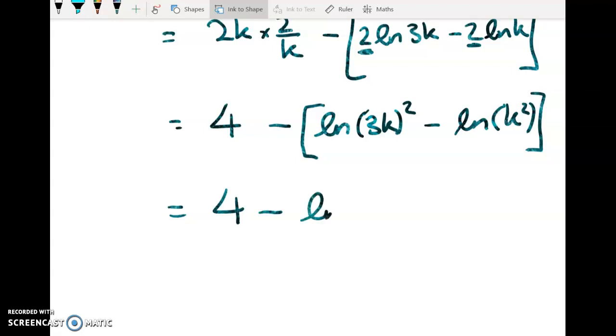I've got the log of 3k squared minus the log of k squared. So I've got 4 minus the log of 9k squared plus the log of k squared. I'm going to combine these.